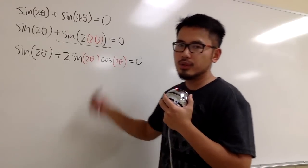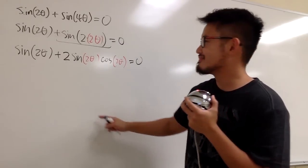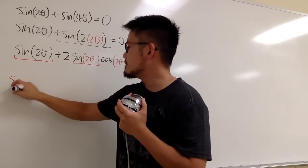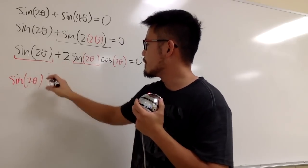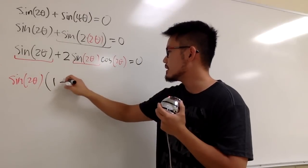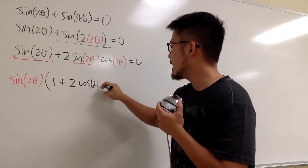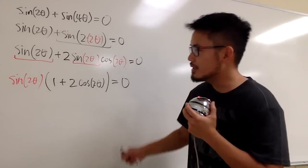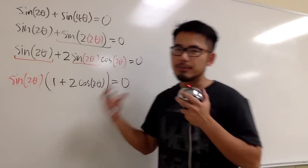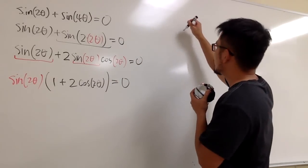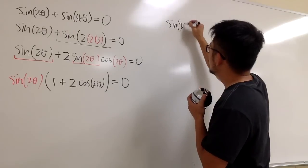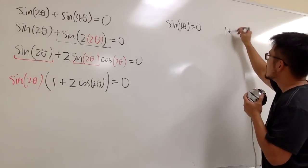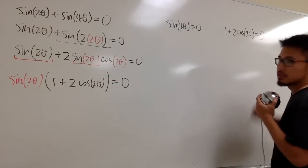Now, both terms have sine of 2 theta, so we can factor it out. The right-hand side is already 0. Factoring gives us sine of 2 theta times the quantity 1 plus 2 cosine of 2 theta, equal to 0. We then set each factor equal to 0: sine of 2 theta equals 0, and 1 plus 2 cosine of 2 theta equals 0.